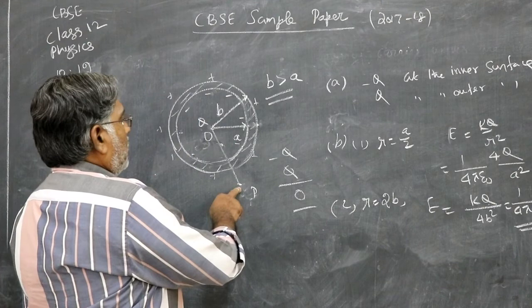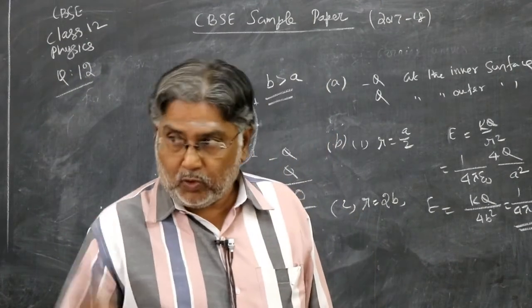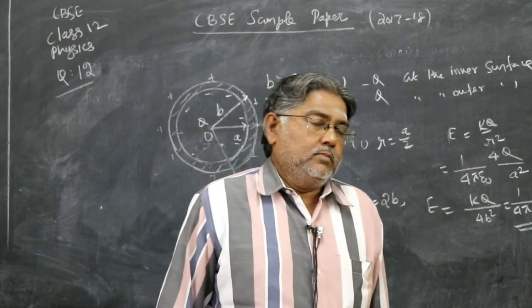This is there at the point outside the shell. Also, inside the shell at a distance R is equal to A by 2 first part. Understood that?